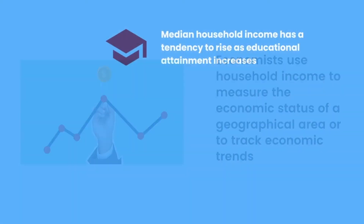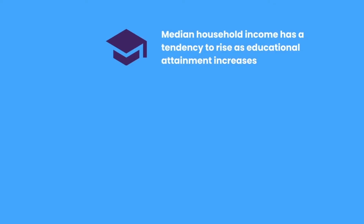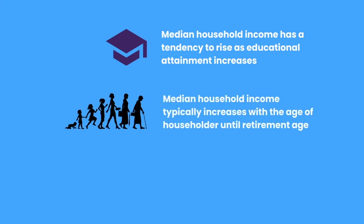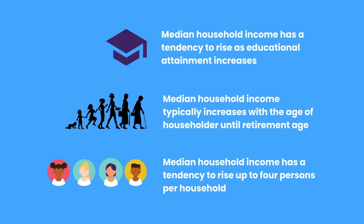Let's look at some interesting facts about household income. Median household income has a tendency to rise as educational attainment increases. Median household income typically increases with the age of the householder until retirement age. Median household income also has a tendency to rise up to 4 persons per household.